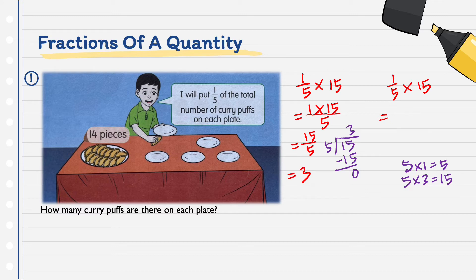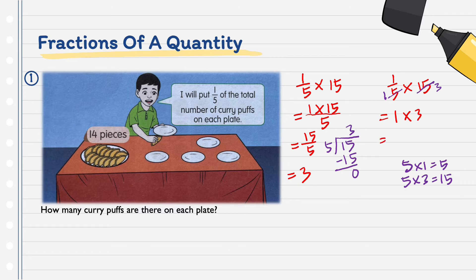5 darab 1 sama dengan 5 — kita potong 5 jadi 1. Yang ini, kita akan guna sifir 5 juga: 5 darab 3 sama dengan 15 — kita potong 15 jadi 3. Lepas kita potong guna sifir 5, kita akan darab. 1 darab 3 sama dengan 3. Yang ini tidak payah kacau lagi sebab dia sudah jadi 1. Jadi, ada 3 biji karipap di setiap pinggan.